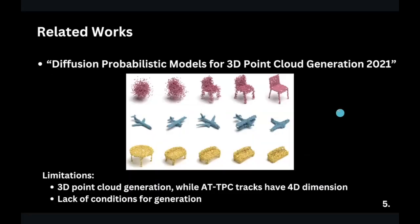In our research we relied on a 2021 article called 'Diffusion Probabilistic Models for 3D Point Cloud Generation.' In this paper the authors use DPM to generate 3D structures using ShapeNet as a dataset, which consists of point clouds in the shape of chairs, sofas, airplanes, cars, etc. Using the ShapeNet dataset is a common practice when it's necessary to evaluate the performance of a model for generating 3D structures.